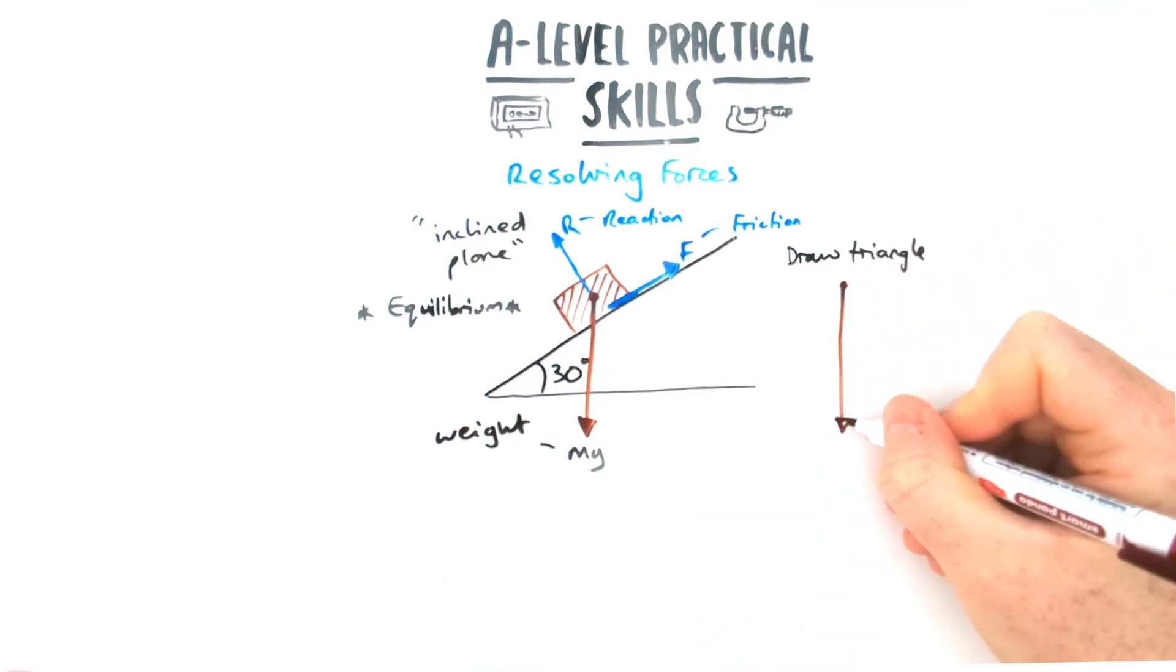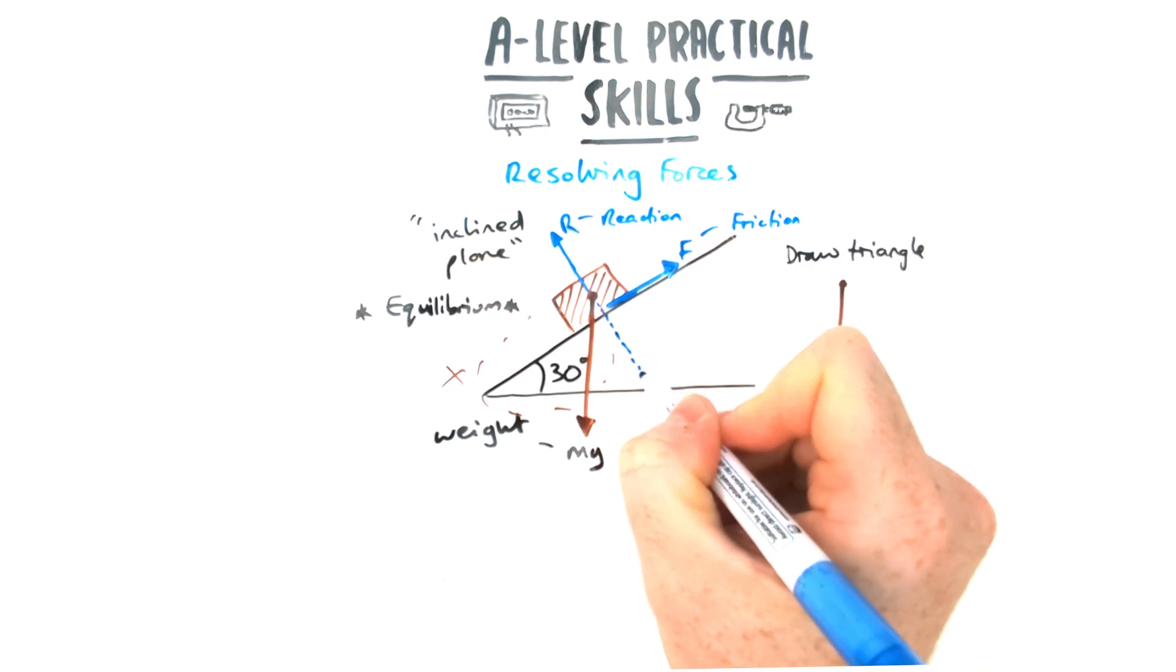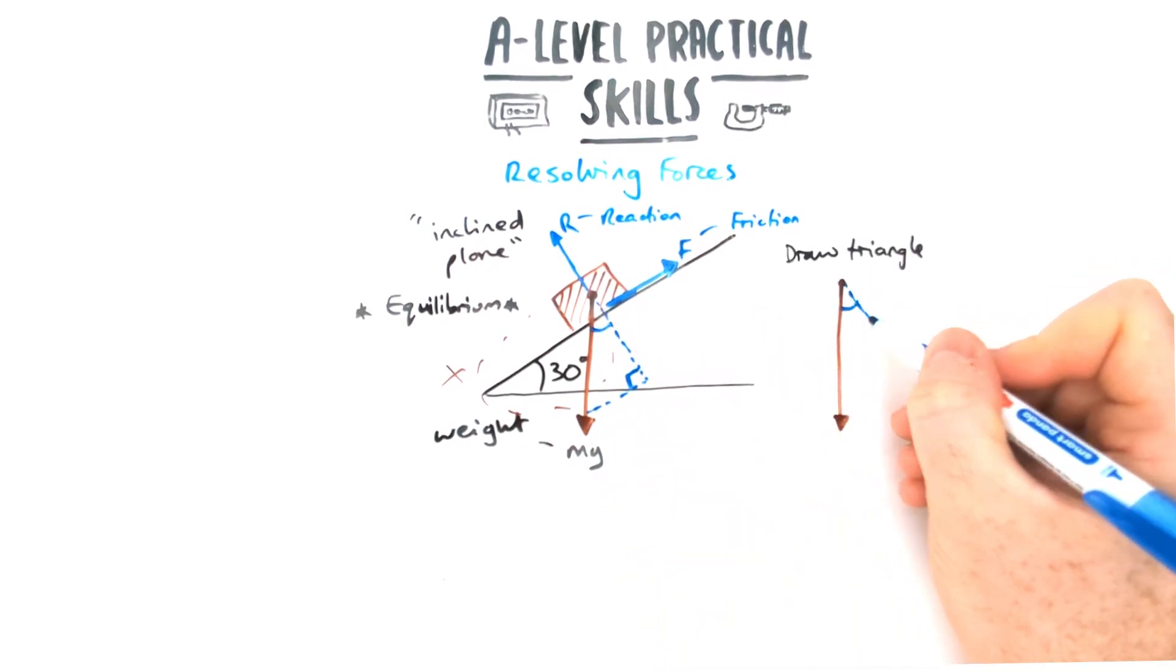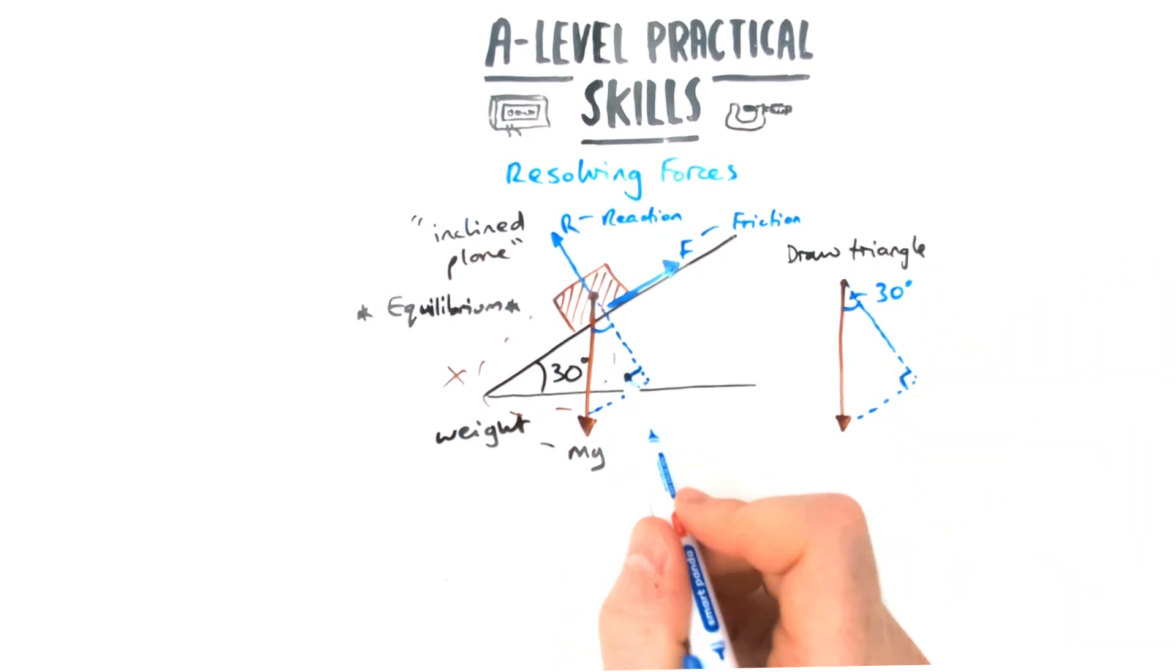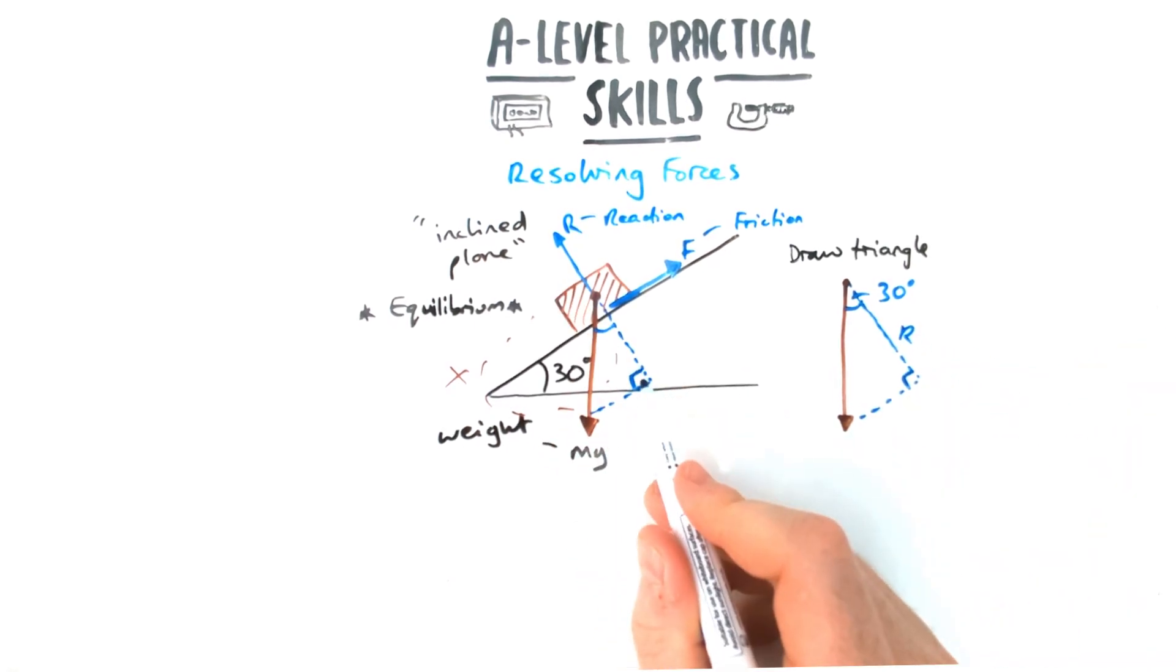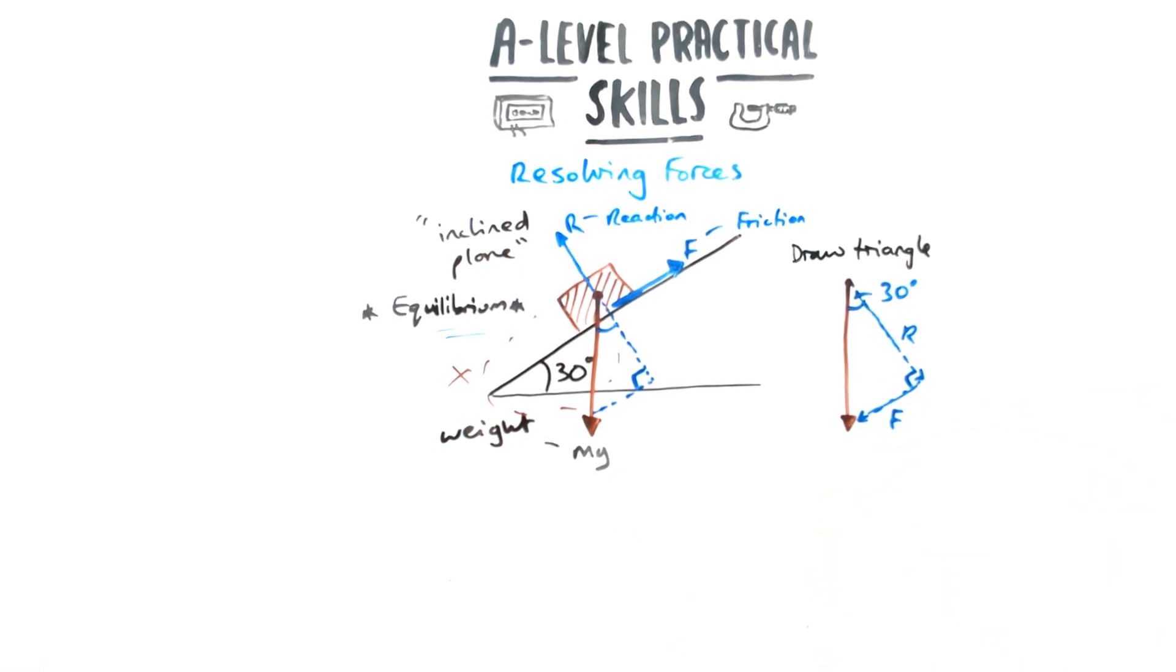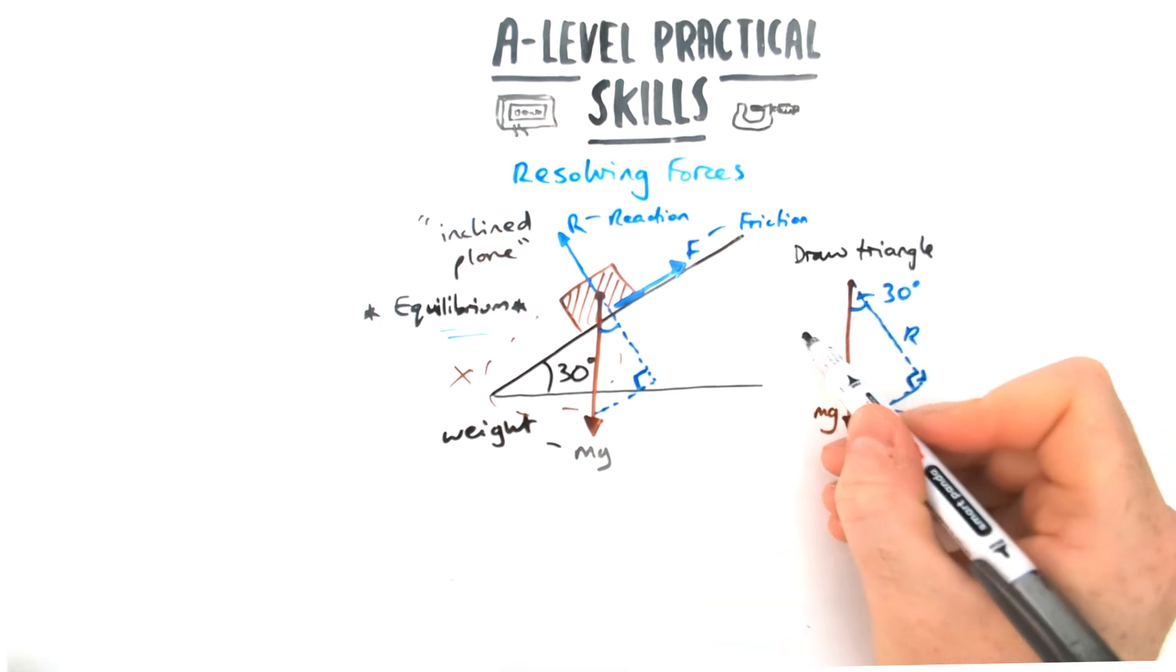I'm going to redraw the weight going downwards. That's going to be my hypotenuse of the triangle. Be really careful with this next triangle. It's not the bit in the nose of the slope. We actually redraw the angle up here. Due to similar angles, that will also equal 30 degrees. The angle that's continuing down in the same plane as R is going to be equal to R because it's in equilibrium. The other one going in the same plane as the slope is going to be equal to F.